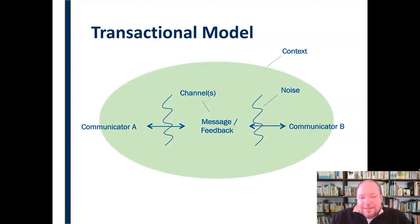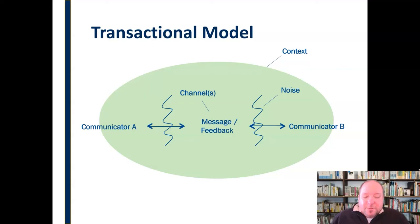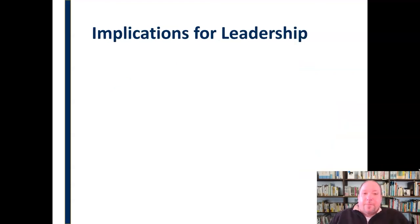Then we have context — the last of these elements. This communication is taking place somewhere, in some circumstance, and in some particular context. Communication does not take place in a vacuum; it happens somewhere, between some people, and there's a relationship there. That's what we mean by context. There's much more depth we could go into with the transactional model, but that was a quick review of the seven elements of the communication process, so we can now break these down and talk about how they impact leadership.